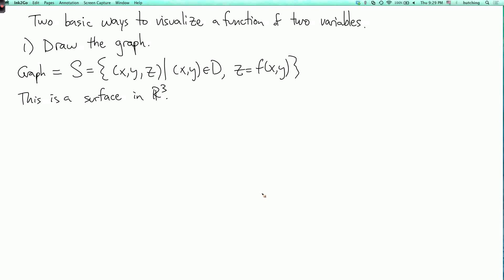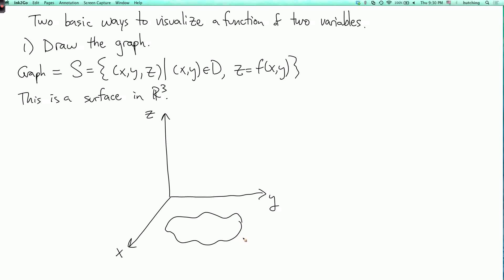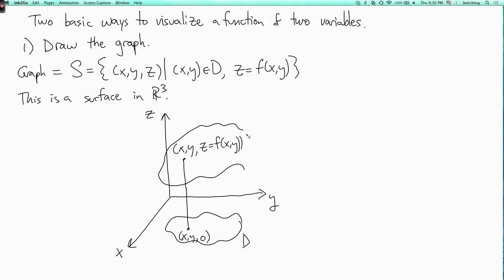To draw a general picture of how this works: if we think of the xy plane as the set where z equals 0, then we have the domain down here in the xy plane. For each point xy in the domain, it corresponds to the point (x, y, 0) in three-dimensional space, and above this is the point (x, y, z) where z equals f(xy). The set of all such points is a surface above the domain D, so the domain D is the shadow when you project the surface onto the xy plane.